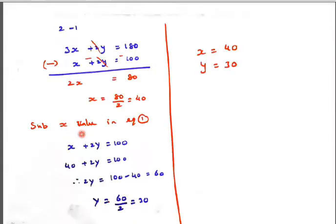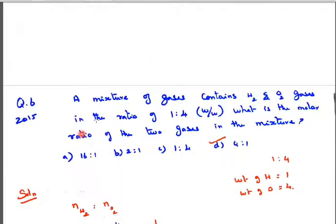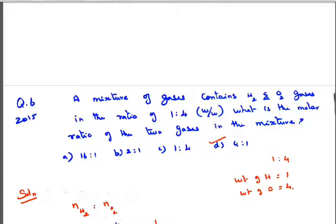Now we will see question number 6, asked in 2015. A mixture of gases contains hydrogen and oxygen in the ratio of 1:4 by weight — hydrogen weight is 1, oxygen weight is 4. What is the molar ratio of the two gases in the mixture? The options given are 6:1, 2:1, 1:4, and 4:1.